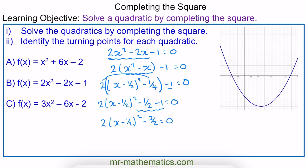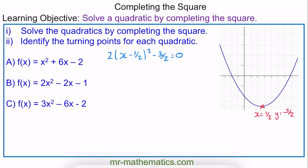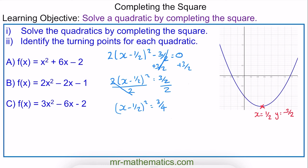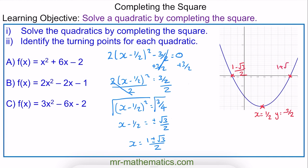From here I can work out the turning point. The squared part of the equation must be 0, so x equals one half. When this equals 0, all of that term is 0, and we get y equals negative three over 2. Continuing to solve the equation to find the coordinates of the two roots: adding three over 2 to both sides, dividing both sides by 2, taking the square root of both sides, and adding the half to both sides. So the roots are x equals one half minus root 3 over 2, and x equals one half plus root 3 over 2.